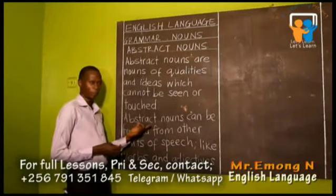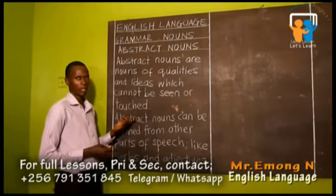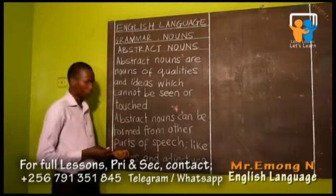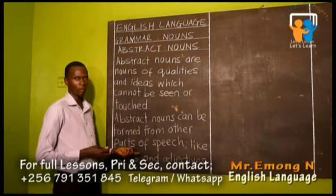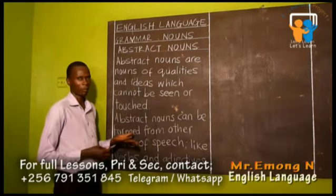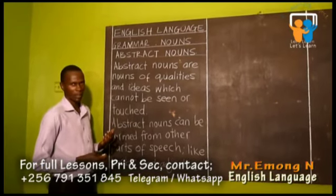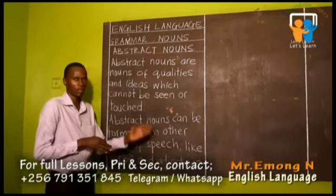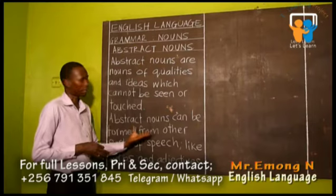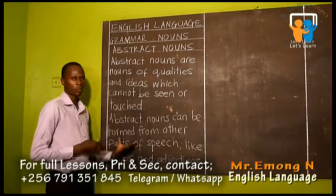Abstract nouns can be formed from other parts of speech, like we learnt in our lower classes. We know other parts of speech — for example, verbs. We can form abstract nouns from verbs, and we can also use adjectives when forming various examples of abstract nouns. As our lesson progresses, we are seeing how we can form various abstract nouns from other parts of speech.